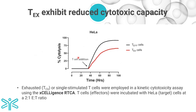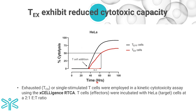Using HeLa cells as target cells with CD3 and CD28 antibodies in a bystander killing assay, single-stimulated T-cells killed approximately 80% of target cells by the end of the assay. Exhausted T-cells were much more deficient, and the half-time of killing was around 25 hours with single-stimulated T-cells versus approximately 38 hours with exhausted T-cells — demonstrating that exhausted T-cells are functionally diminished.